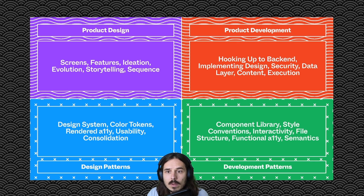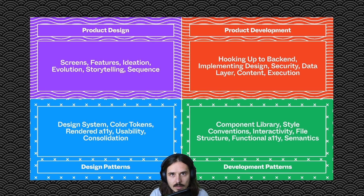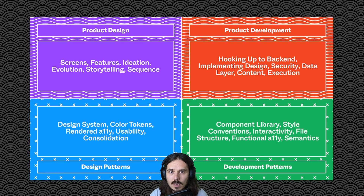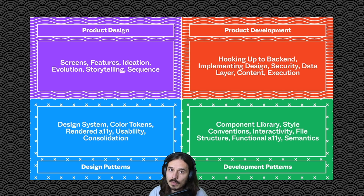In product design, this is typically where we're thinking about screens, the future of the product, the direction we're going. There's a lot of storytelling here, narrative about the evolution of the product. Beneath it, we have the design patterns that kind of support that effort. That might be a design system, or it could be as simple as color tokens or considerations about the accessibility of a color palette.